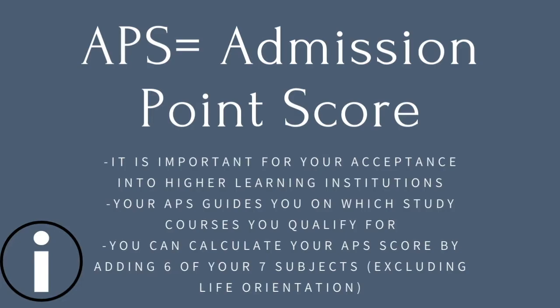You can calculate your APS score by adding six of your seven subjects, excluding Life Orientation. So you don't add Life Orientation — you only count six of your seven subjects.